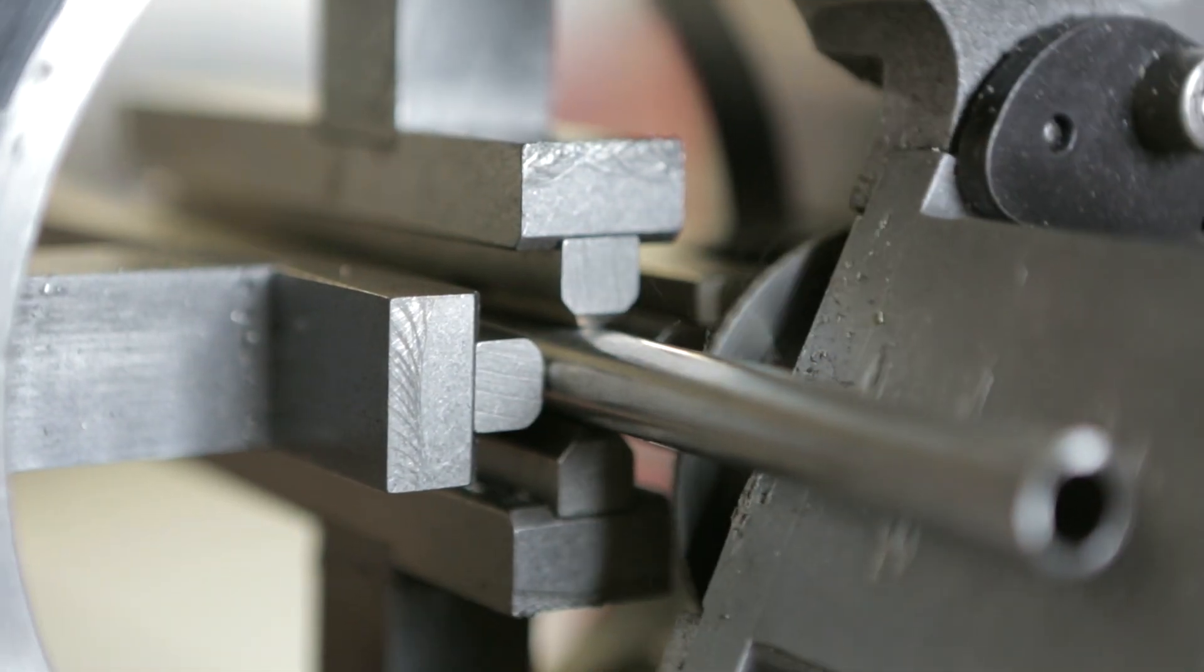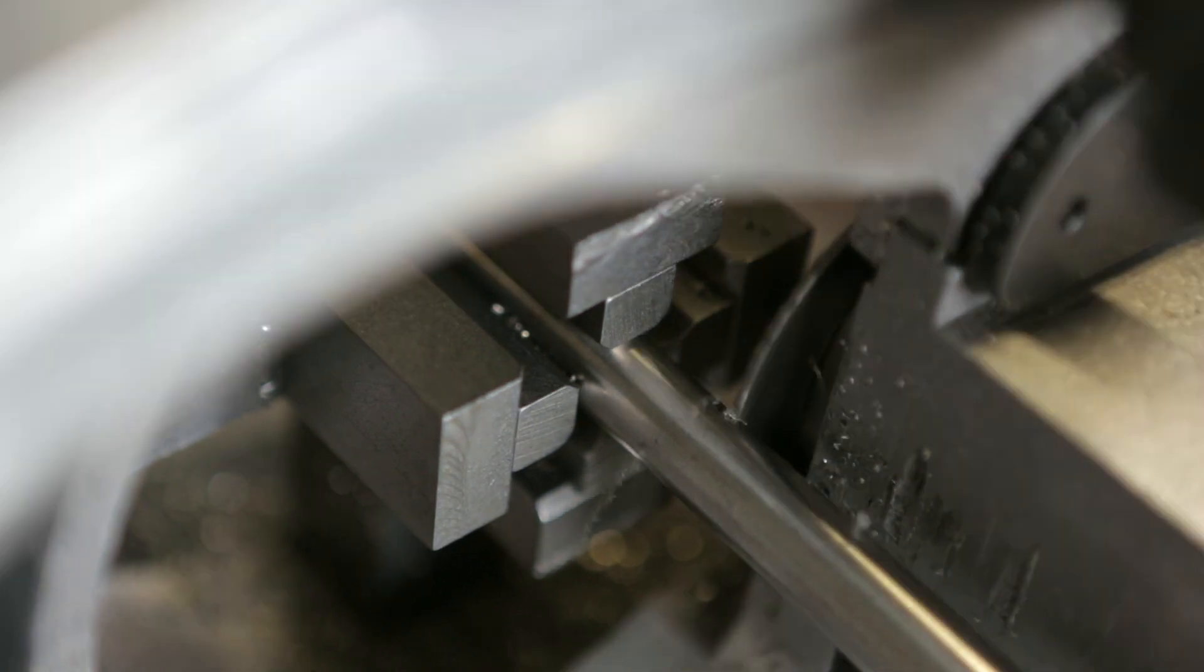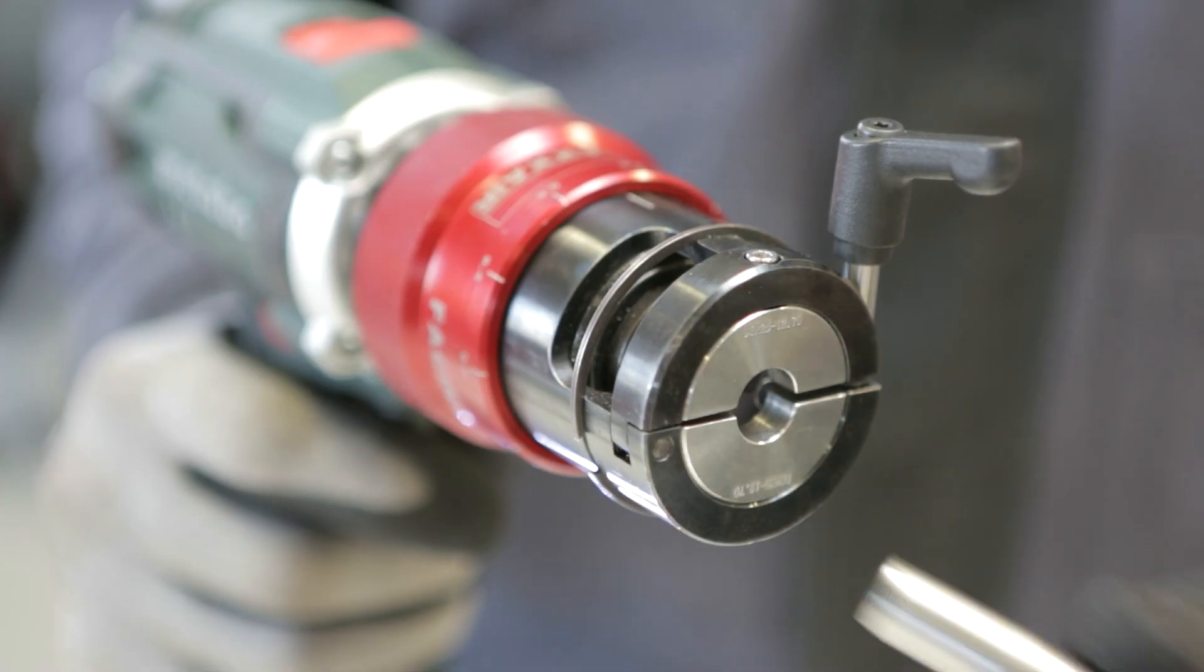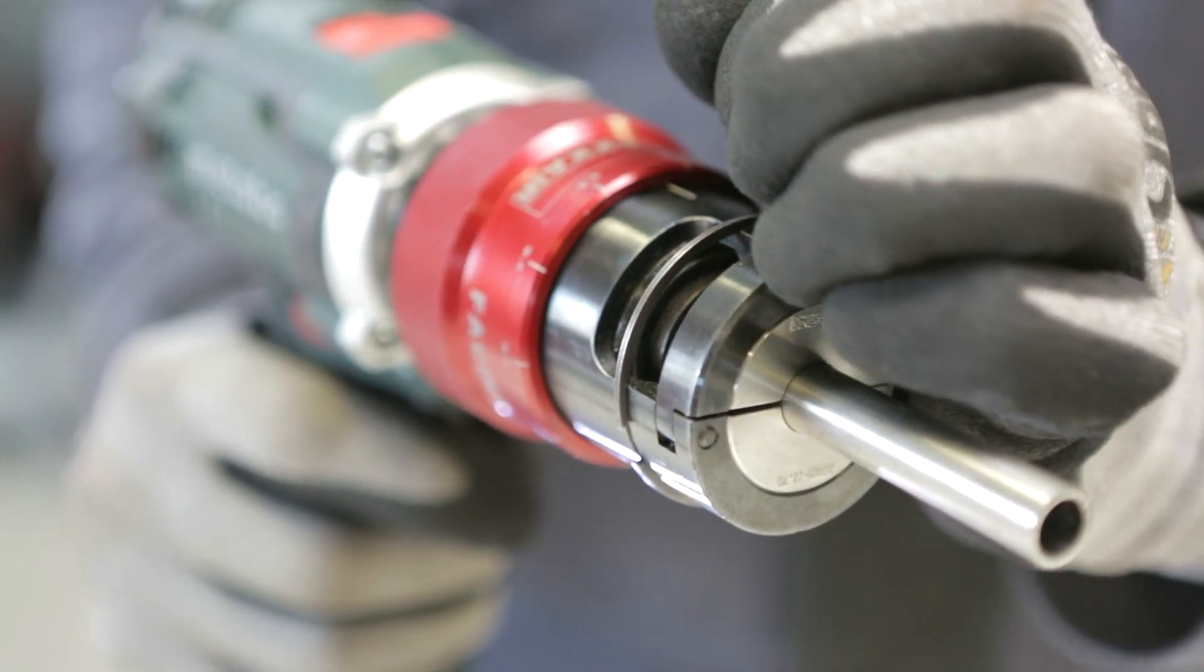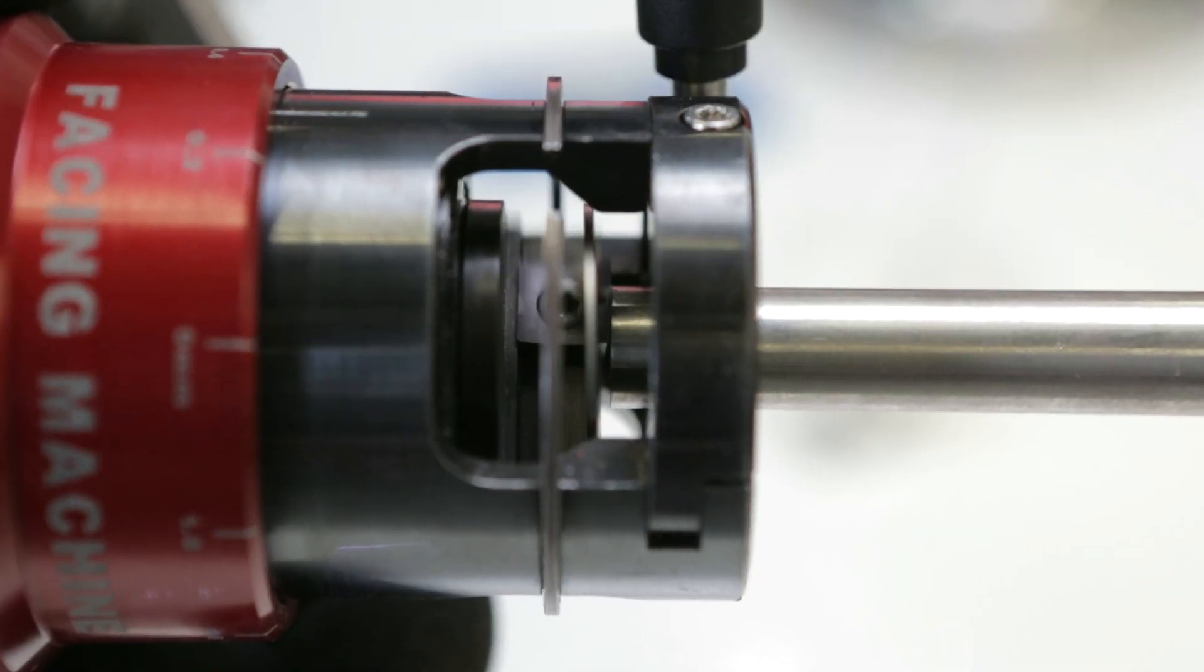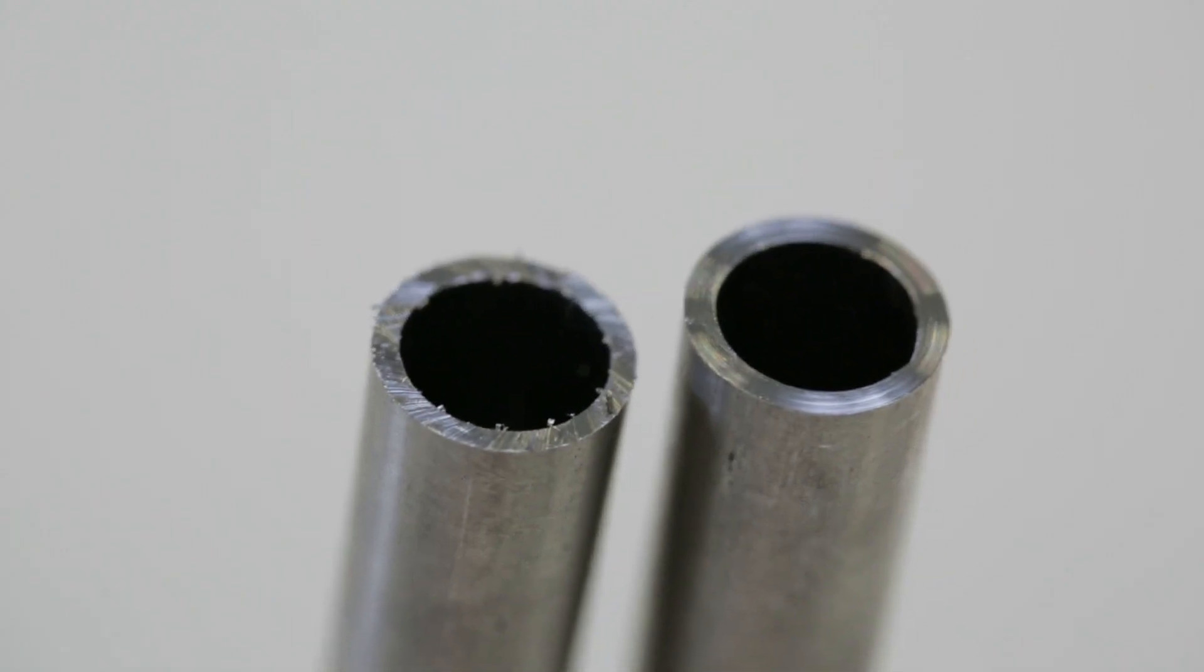For this type of welding procedure, preparation is key. Whether the cut was made with an orbital cutting machine or a pipe cutter, squaring the tube is highly recommended to ensure that the cut is as straight as possible and bur-free.